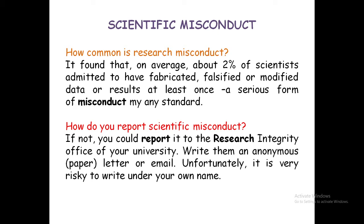Number 4 is general misconduct statistics. It is found that on average about 2% of scientists admitted to having fabricated, falsified or modified data or results — at least one serious form of misconduct by any standard. How do you report scientific misconduct? You could report it to the research integrity office of your university, or write an anonymous letter or email. Unfortunately, it is very risky to report under your own name.